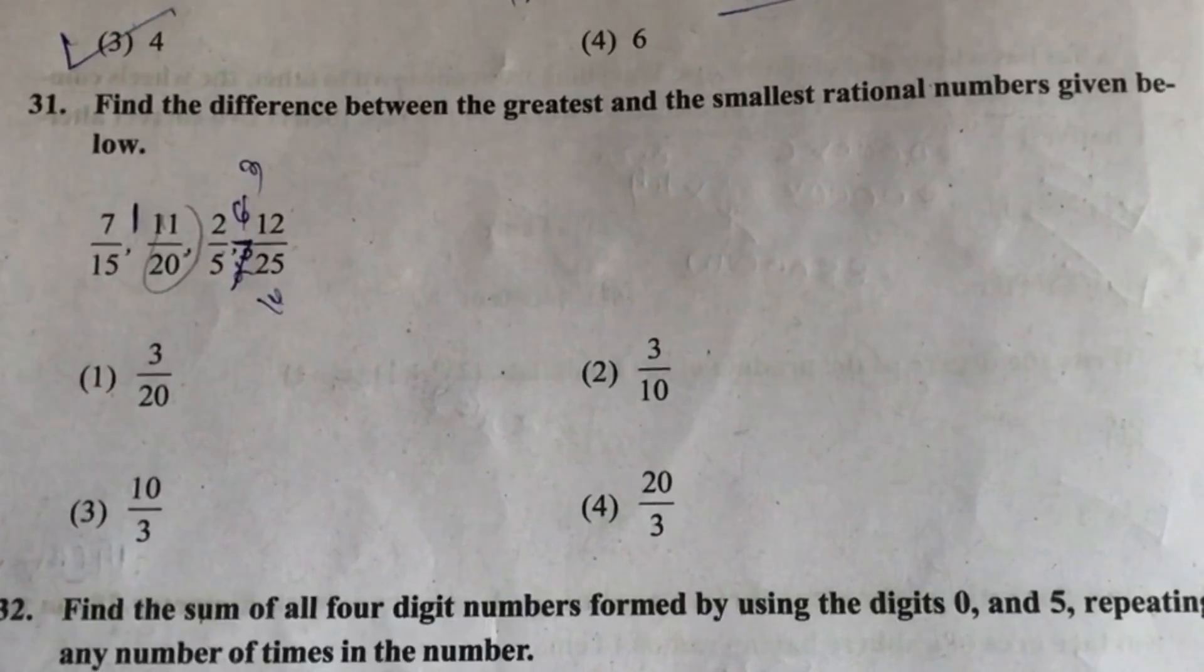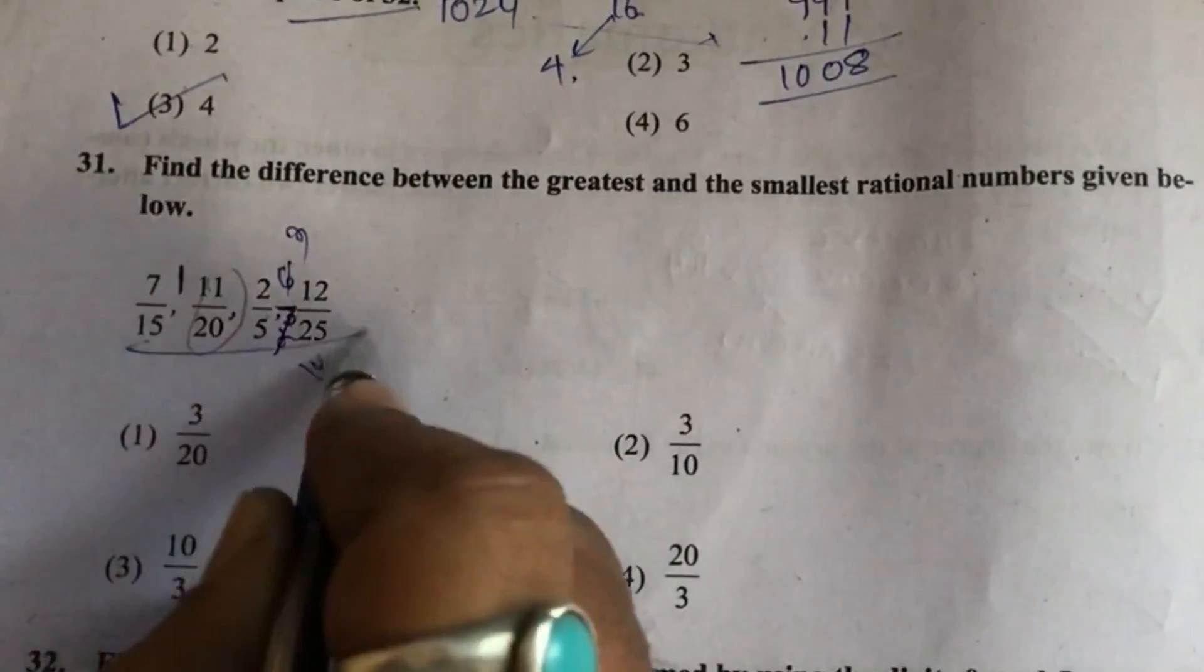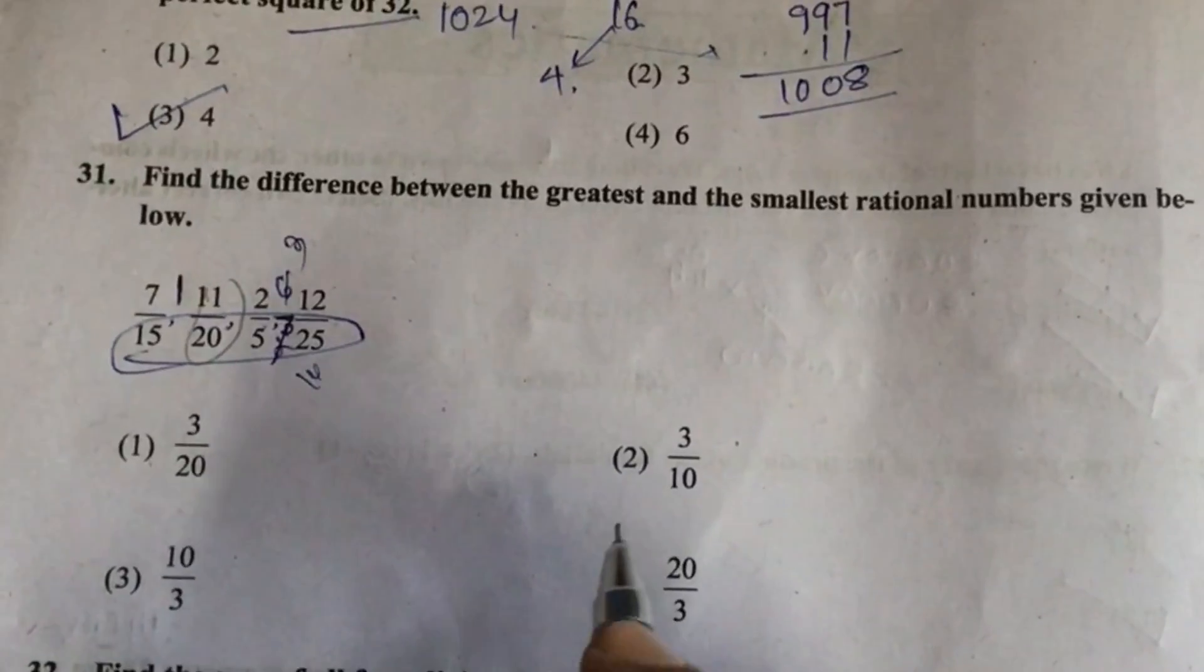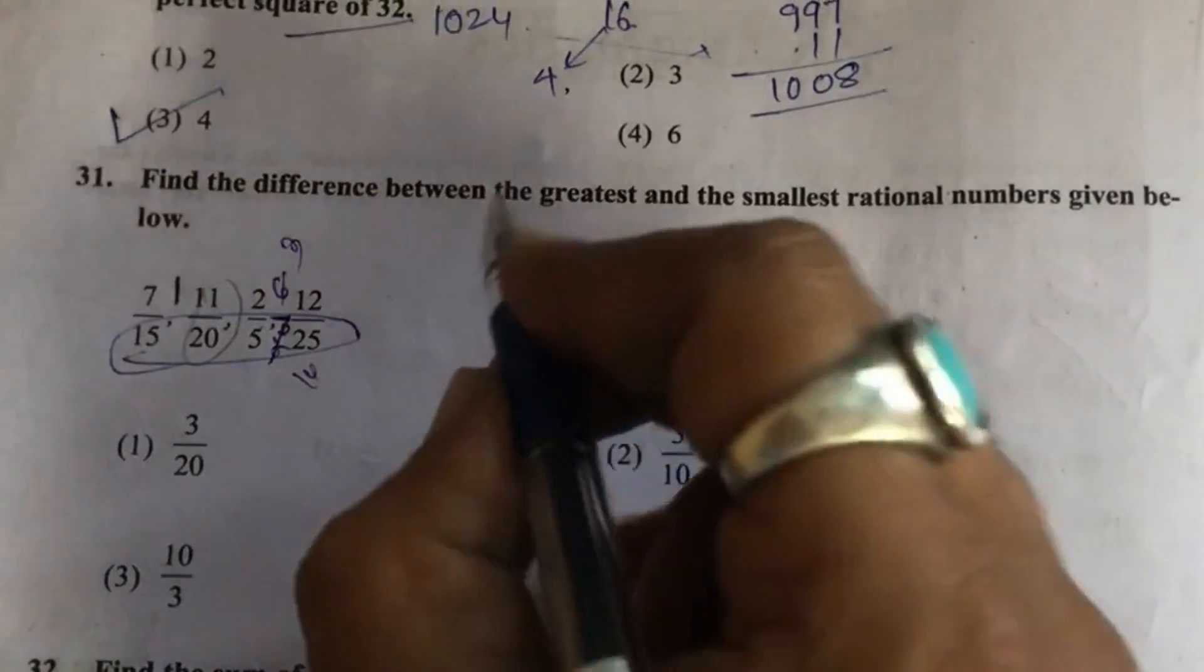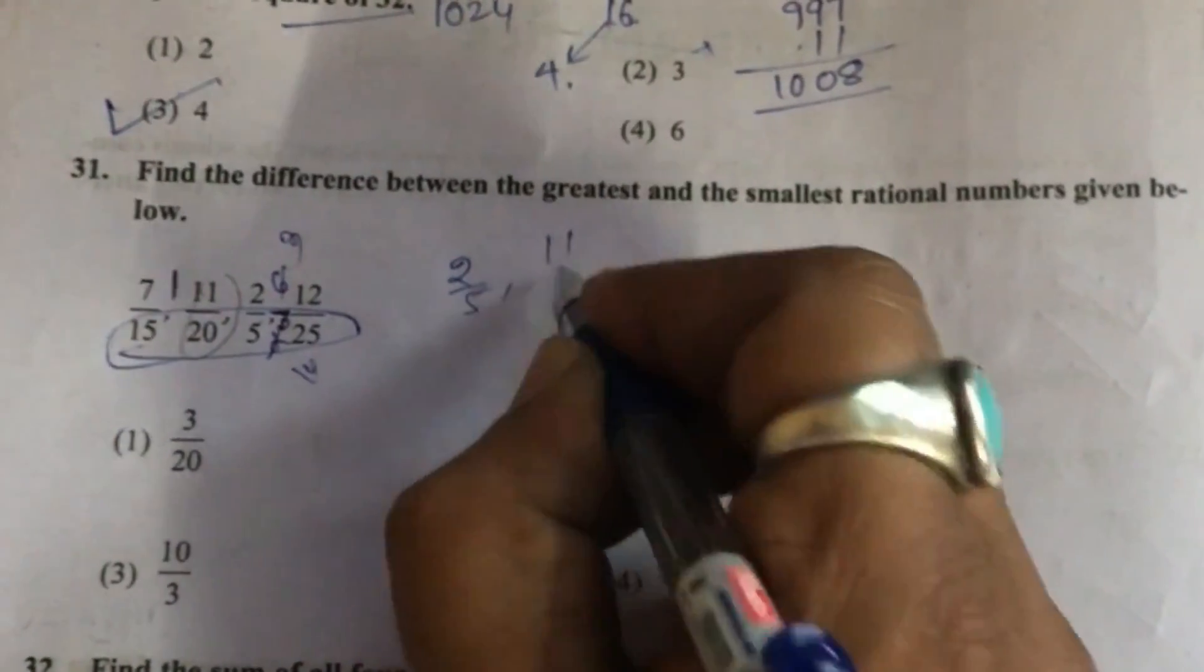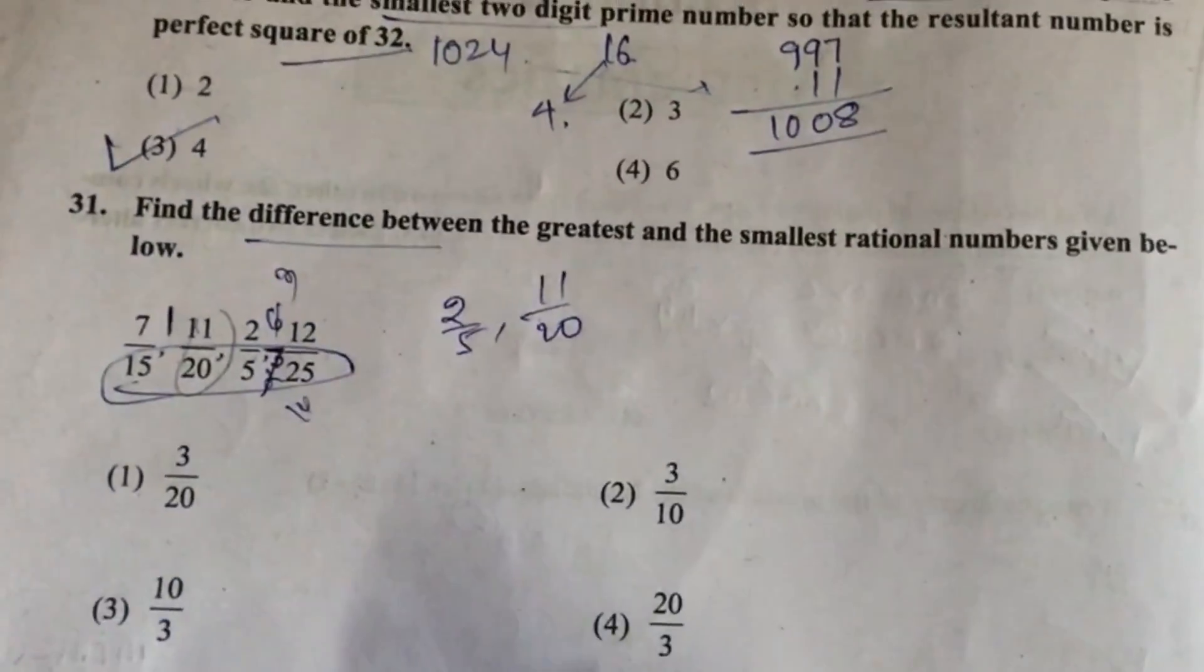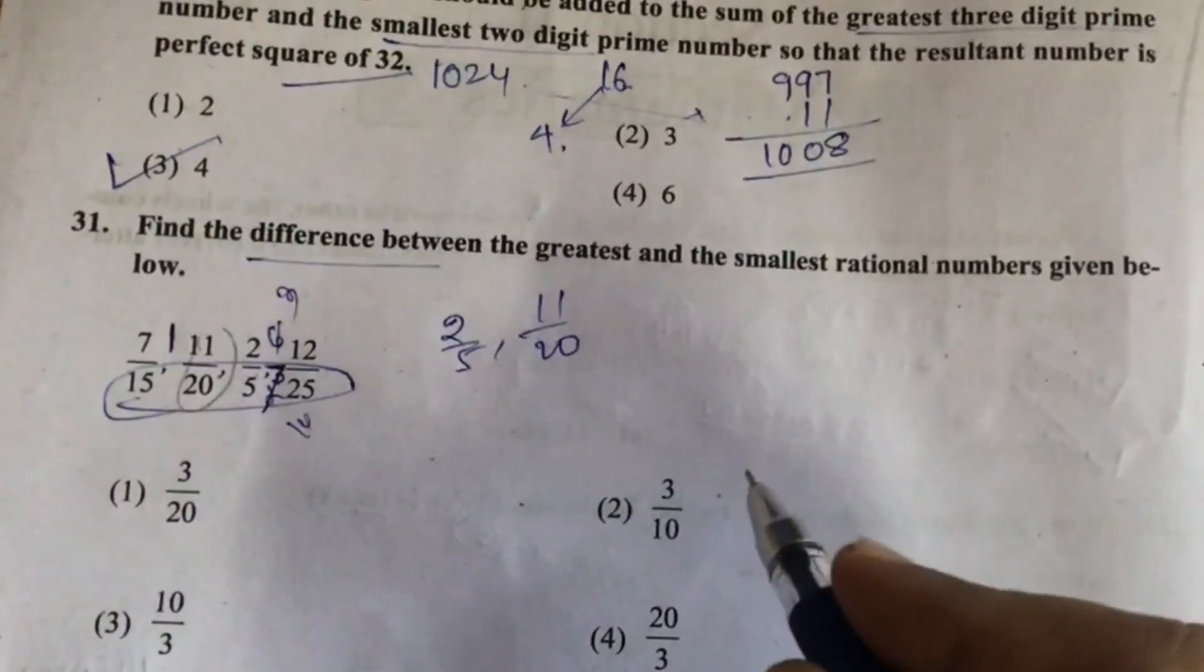Question 31: Find the difference between the greatest and smallest rational number given below. When we take LCM and solve, we will get smallest number and greatest number as 2 upon 5 and 11 upon 20. Now we have to subtract and solve, then we will get the answer.